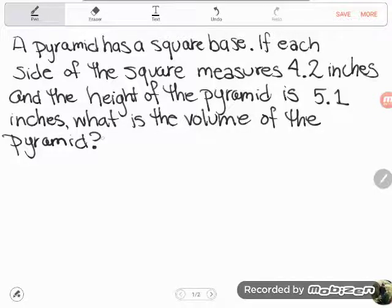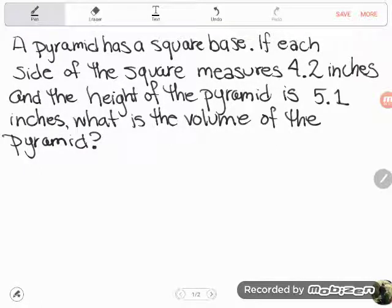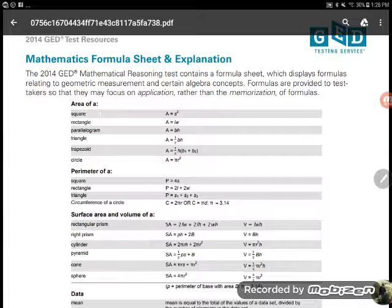A pyramid has a square base. If each side of the square measures 4.2 inches and the height of the pyramid is 5.1 inches, what is the volume of the pyramid?